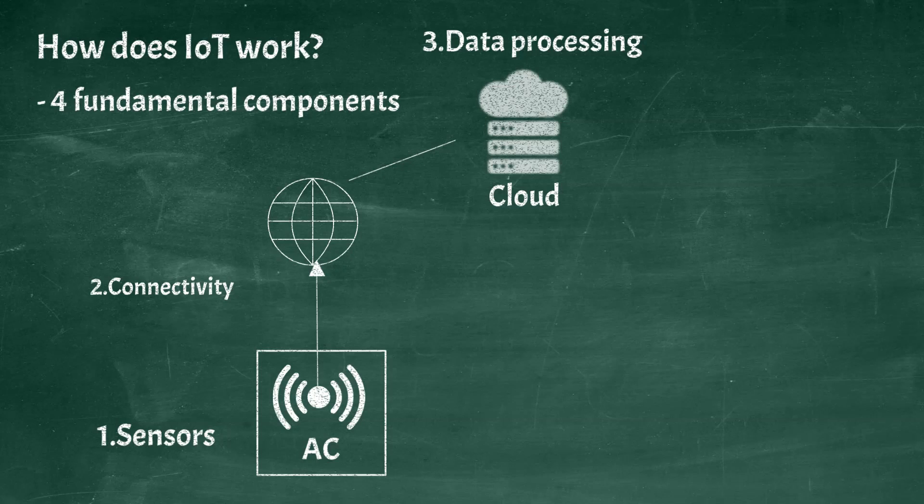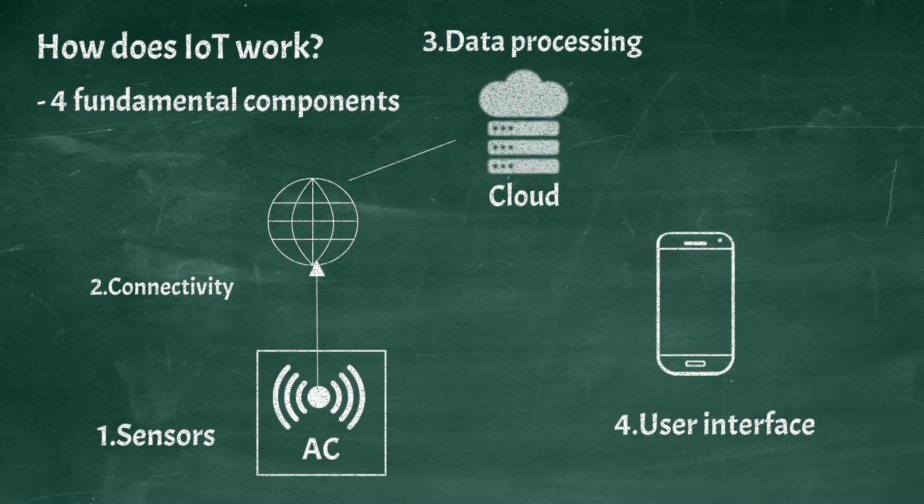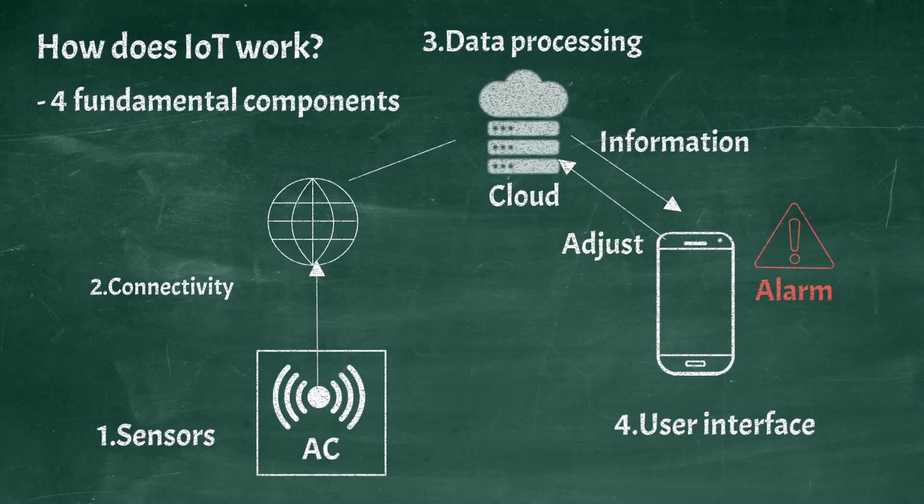The fourth component is user interface. The information is made available to the end user in some way. This can be achieved by triggering alarms on phones or notifying through emails or text. The user can remotely adjust the temperature via their personal phone.